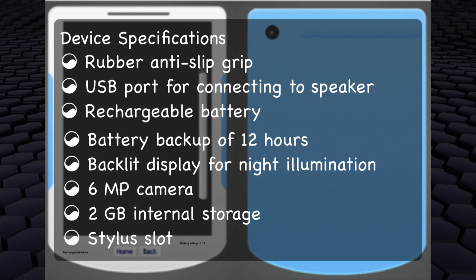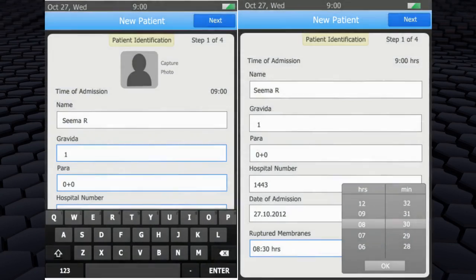Other specifications are rubber anti-slip grip, USB port for connecting to speaker, rechargeable battery, battery backup of 12 hours, backlit display for night illumination, 6MP camera, 2GB internal storage and stylus slot. Impressive, huh? Here are some screenshots of e-partograph in use.